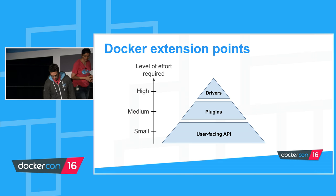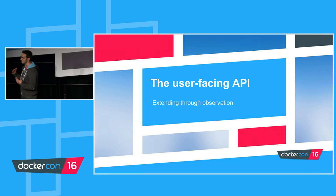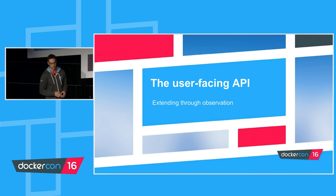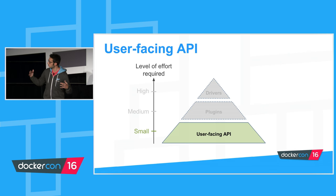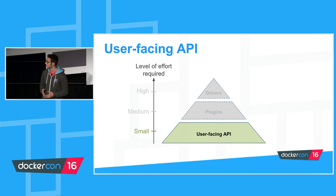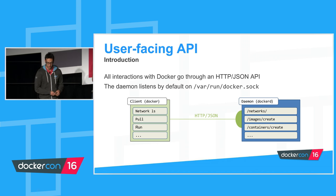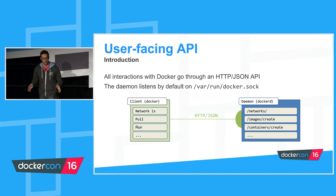I'm going to start at the bottom of the pyramid, which is the easiest way to extend the engine, though less powerful. There's a lot you can do just by relying on the API. This is where most use cases will happen — how most of you, regardless of your use case, may find ways to customize, tweak, and automate how you use the Docker engine. All interactions with Docker go through an HTTP JSON API.